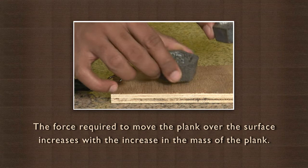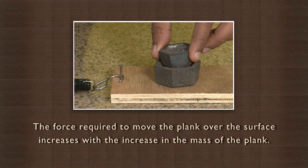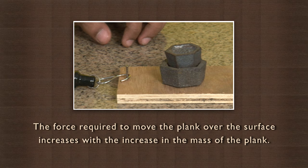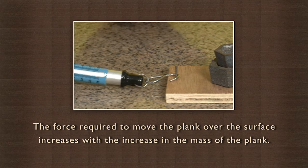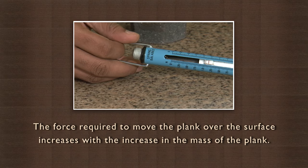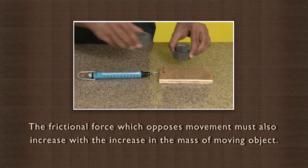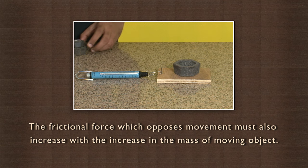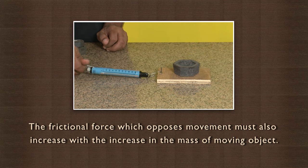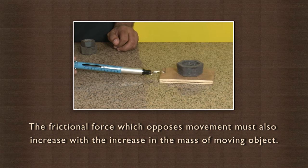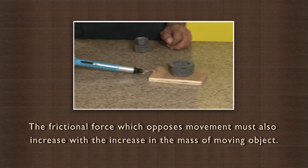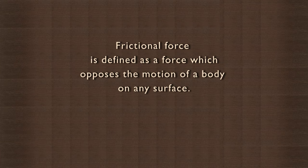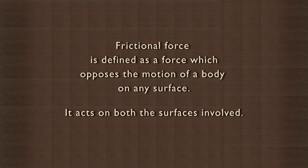We observed that the force required to move the plank over the surface increases with the increase in the mass of the plank. This means that the frictional force that opposes movement must also increase with increase in the mass of the moving object. Frictional force is defined as a force which opposes the motion of a body on any surface, and it acts on both the surfaces involved.